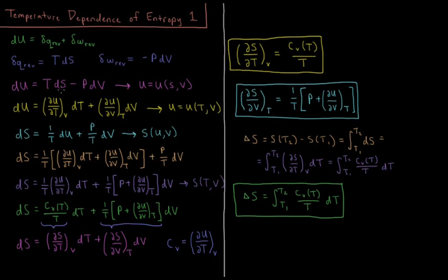We can rearrange the equation du = TdS - pdV, solve for dS, and then substitute in these expressions. We get dS equals 1 over T times du plus p over T times dV, showing that we can express entropy as a function of internal energy and volume. Substituting in the expression for du, we get dS equals 1 over T times (∂u/∂T) dT plus (∂u/∂V) dV, plus the leftover term p over T times dV.